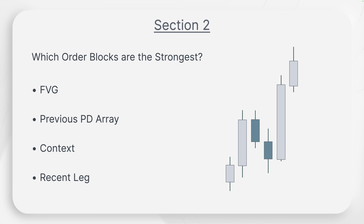So in your notes, it's very important to understand: if there is no fair value gap, then there is no order block. Very important.